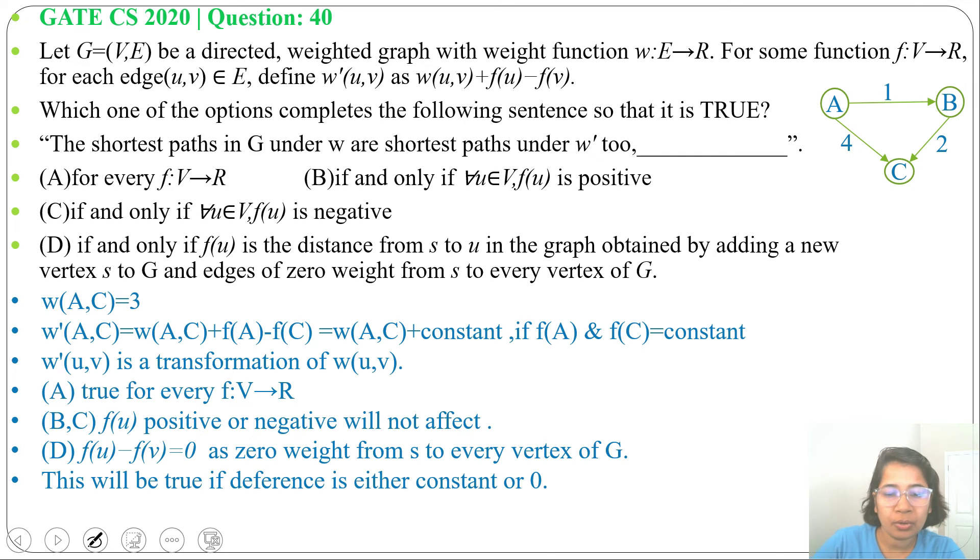So F(U) minus F(V) equals 0 as 0 weight from S to every vertex of G. And this will be true if either it's constant or 0. If S to every vertex cost is 0 or it may be some constant, it may be 2, 3, 4, 5, it may be some constant. If it will be constant also, F(U) minus F(V) will be 0. So due to this, if and only if, this is false.